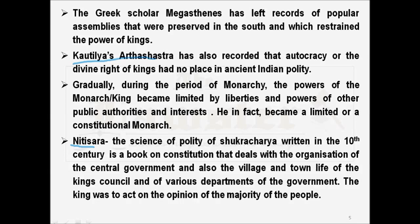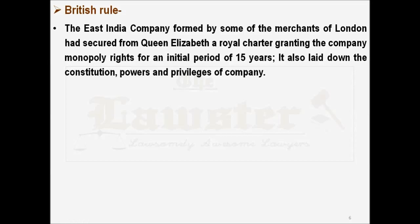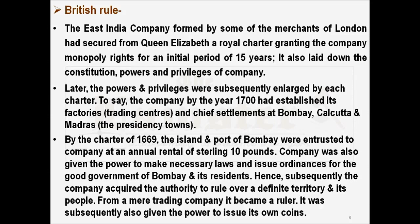Coming to the British rule — how the company was formed and how the East India Company came into existence: the company was formed by some merchants of London who secured from Queen Elizabeth a royal charter granting the company monopoly rights for an initial period of 15 years. The charter laid down the constitution, powers, and privileges of the company, which were subsequently enlarged by further charters. By the year 1700, the company had established its factories — i.e., trading centers — and chief settlements at Bombay, Calcutta, and Madras. These were called presidency towns because the main functions of the company were handled through them.